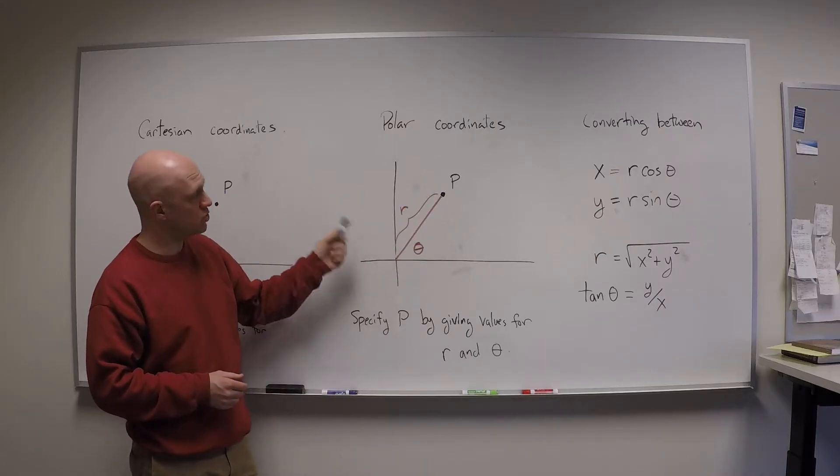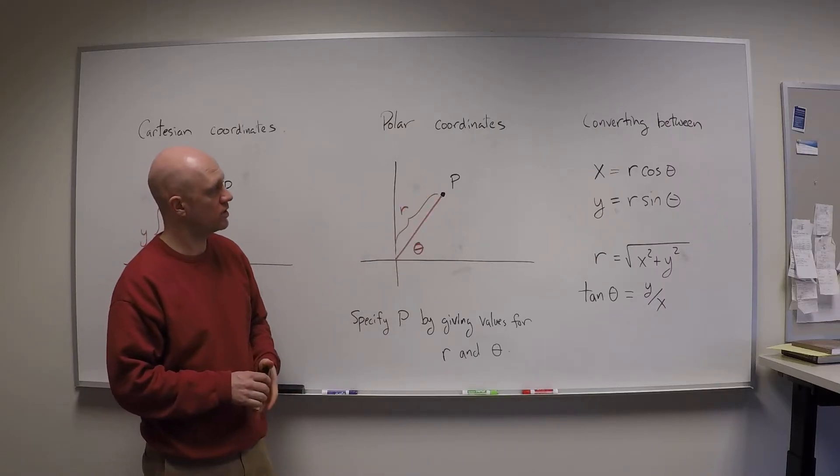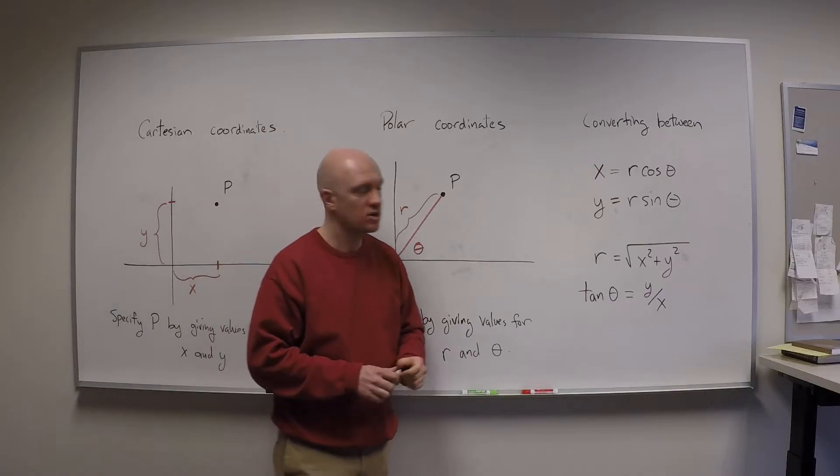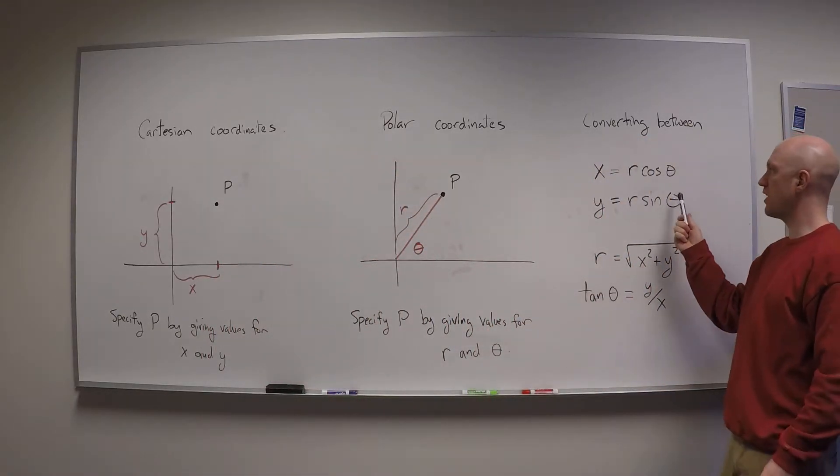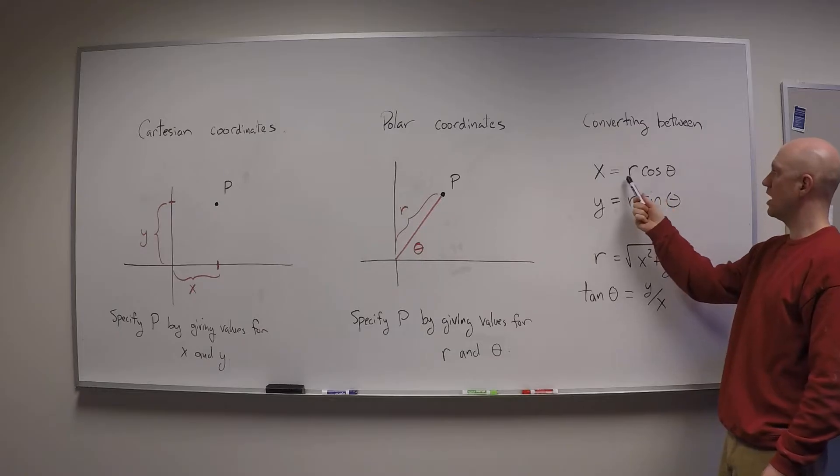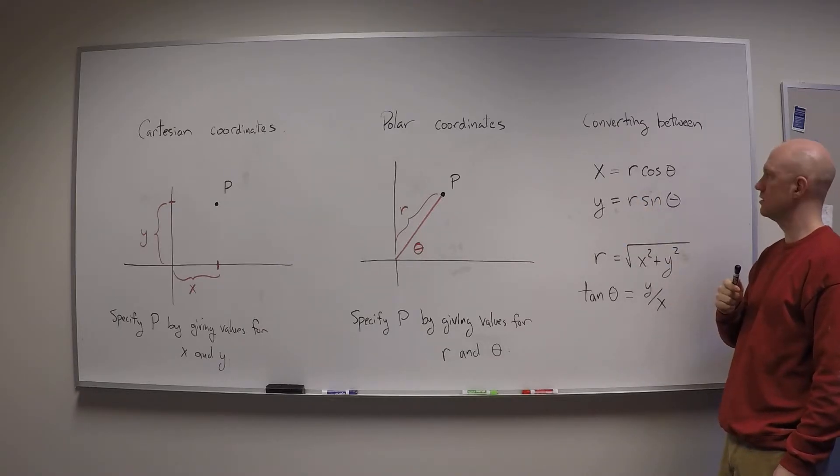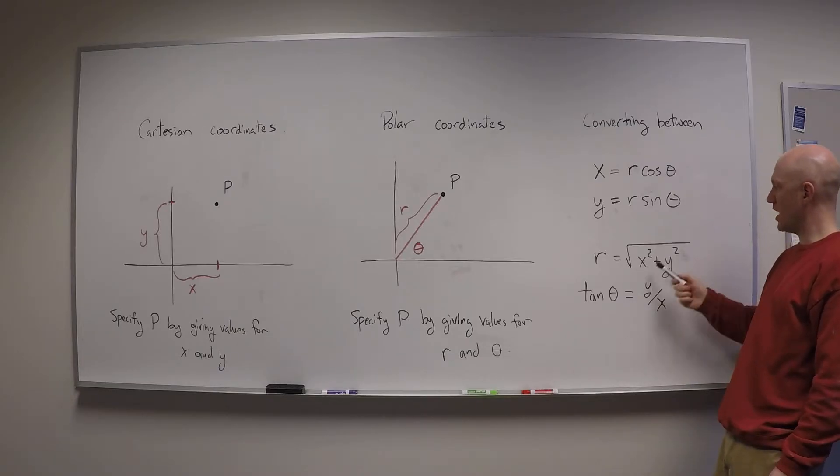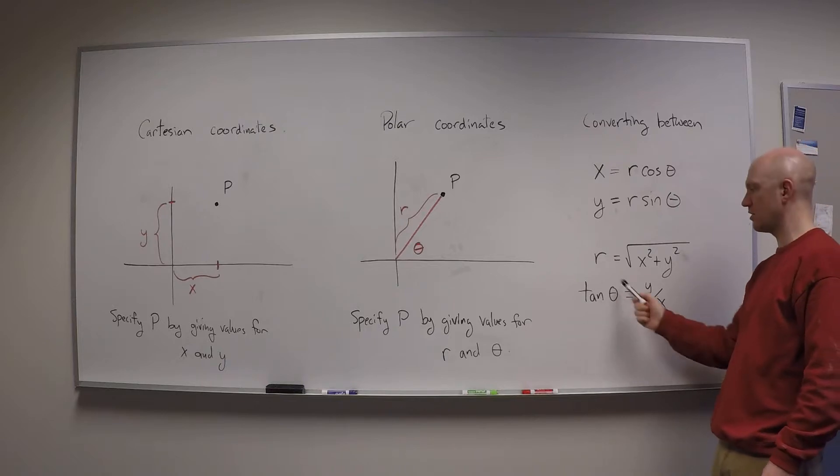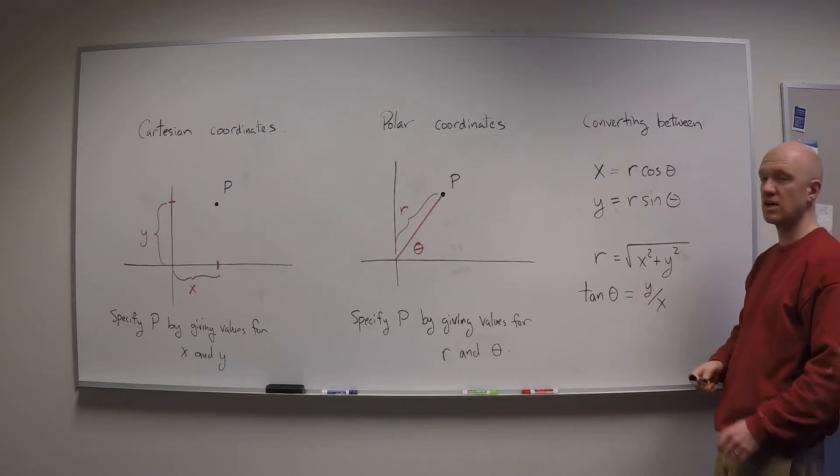And so we can get between Cartesian and polar coordinates using some trig. So for example we have this conversion that says if I know what r and theta are I can then tell you what x and y are. And vice versa if I know what x and y are I can then tell you what r and tan theta, and I can take the inverse tangent to find theta specifically.